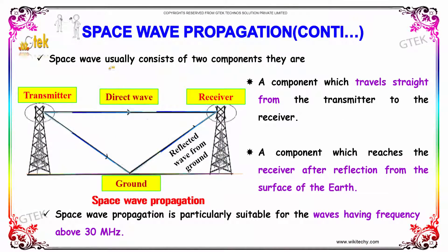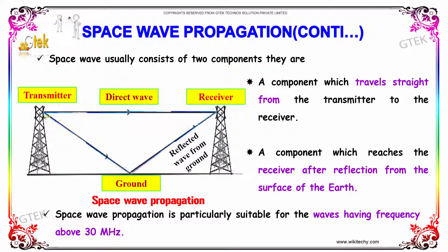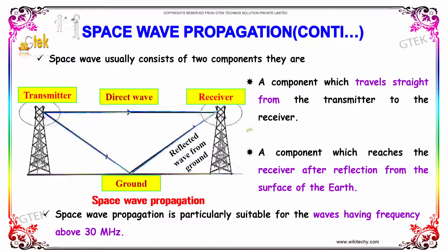The space wave usually consists of two components: a component which travels straight from the transmitter to the receiver, and a component which, after reflection from the ground, is received at the receiver. Space wave propagation is particularly suitable for waves having a frequency above 30 megahertz.